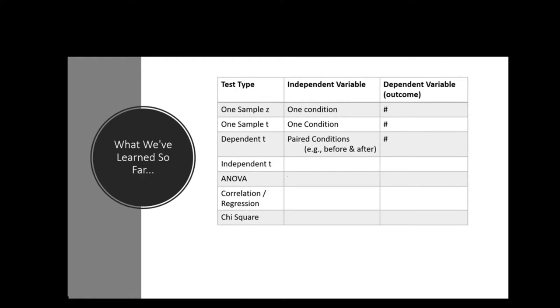We then talked about an independent t where we had two separate conditions predicting a number outcome. And then there was the ANOVA where we had three or more conditions predicting a number outcome. Then lastly we just learned about correlation regression where we had numbers predicting numbers. So the one thing left that we haven't done is just dealing with conditions themselves. So no number outcomes. We have the chi-square where we're going to look at how a condition can either just be explored on its own or predict another condition. Do you see how that hasn't been explored so far?